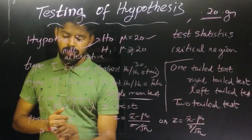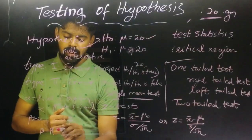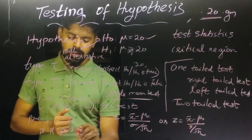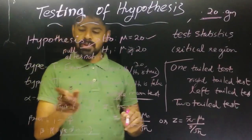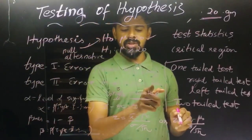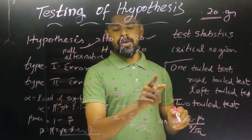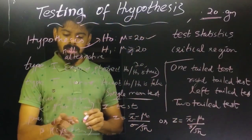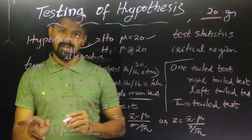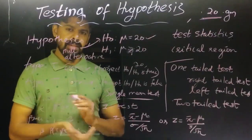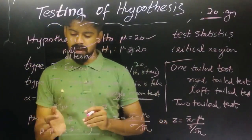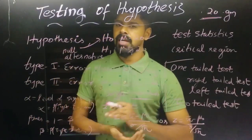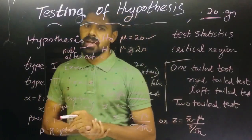The probability of Type 2 error is beta, which is the probability of accepting H0 when H0 is false. The power of the test is 1 minus beta, that is 1 minus the probability of Type 2 error.